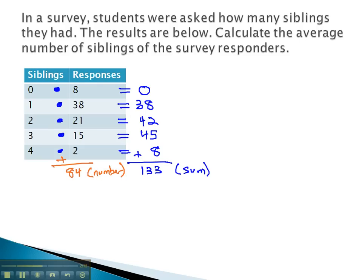To calculate the mean then, we take the sum, when they're added all together, 133, divide by the number of responses, which is 84. And using our calculator, we find the average number of siblings in this survey was about 1.58 siblings.